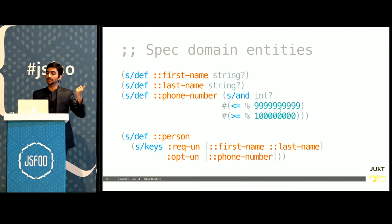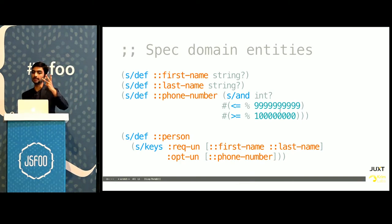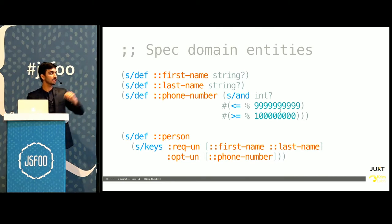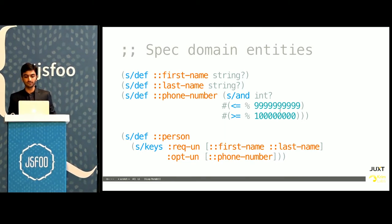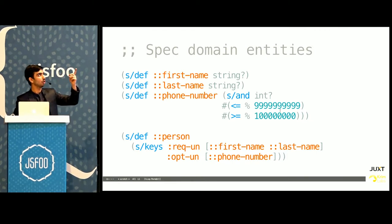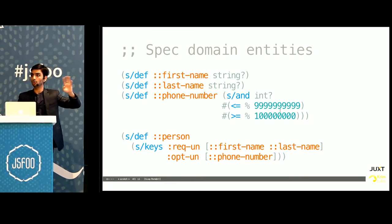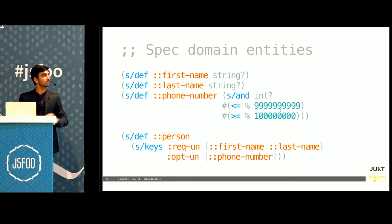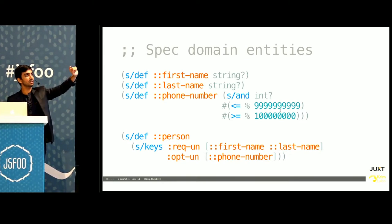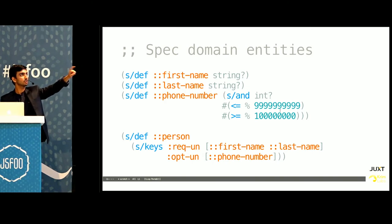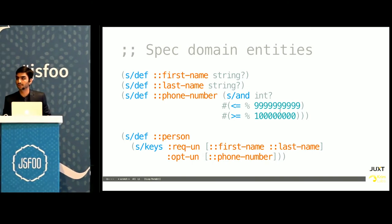Here I've defined a person, which is a map with three keys: two required — first name and last name — and one optional — phone number. All of these parameters are just functions. There are no first-class types. String is a function, integer is a function, and so are these inline functions that compute less-than or greater-than values.